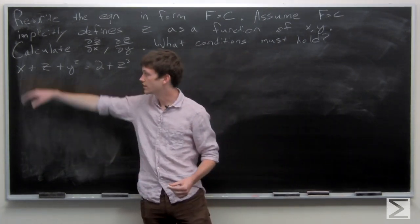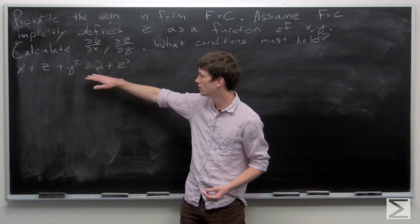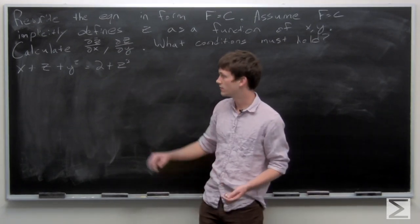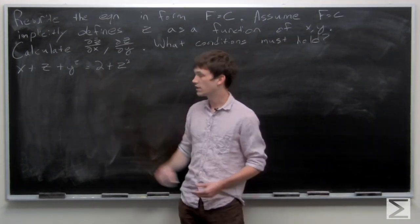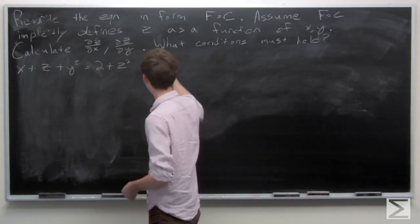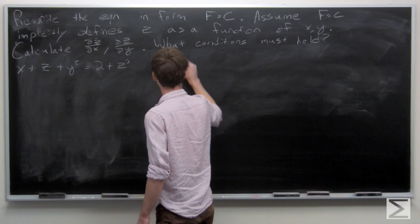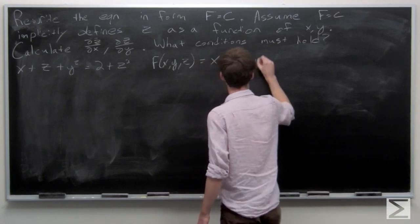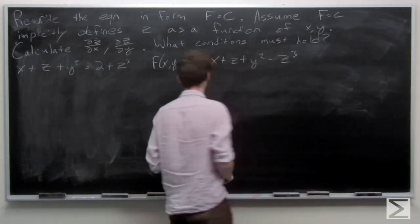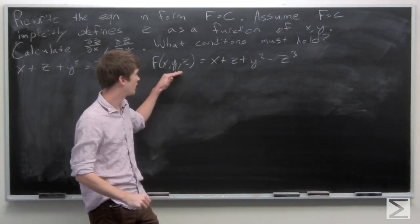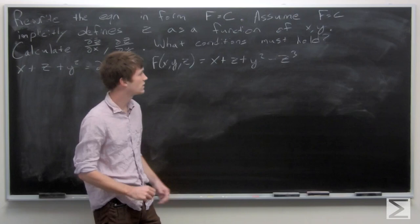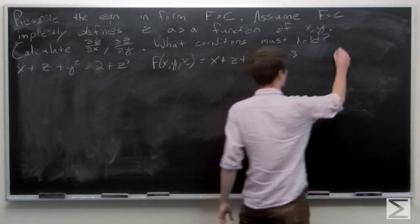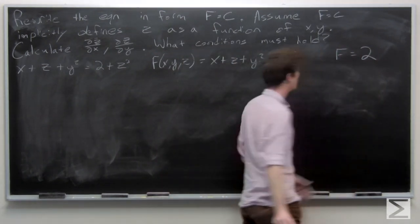We're given that our equation is x plus z plus y squared equals 2 plus z cubed. So first we'll get this in the form of some function equals a constant. 2 is our only constant, so we'll just bring the z cubed to the other side. So we get that our function f of x, y, z is equal to x plus z plus y squared minus z cubed, and then we're looking at when f is equal to 2.